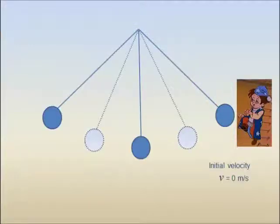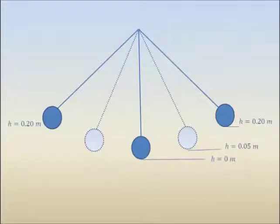If you just let the ball go without pushing then the initial velocity of the ball is equal to zero. Let's define the height as zero at the lowest point. The maximum height is measured as 20 cm or 0.2 m.